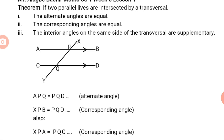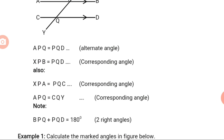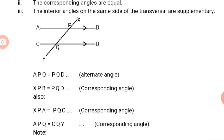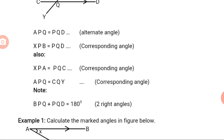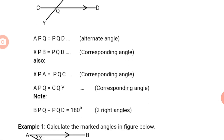Likewise, angle XPB is equal to angle PQD — that is a corresponding angle. Also, angle XPE is equal to angle PQC — corresponding angle. Also, angle APQ is equal to angle CQY — that is also a corresponding angle. But note: angle PBQ plus angle PQD is equal to 180 degrees, that is two right angles. These are the interior angles on the same side of the transversal, and they are supplementary.